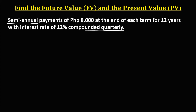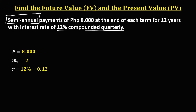To solve for the future value and present value, first we list all the given values. The periodic payment is 8,000 pesos. M1, the payment interval, is 2 since payment is semi-annual. The interest rate is 12%, or 0.12 in decimal. M2, the compounding period, is 4 since it is compounded quarterly. And the time is 12 years.